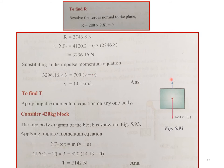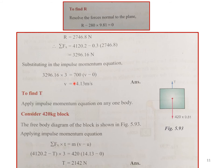To summarize the approach: first find velocity by applying the impulse-momentum equation to the combined system, which eliminates tension. Then, to find tension in the cable, apply the impulse-momentum equation to any one block individually.